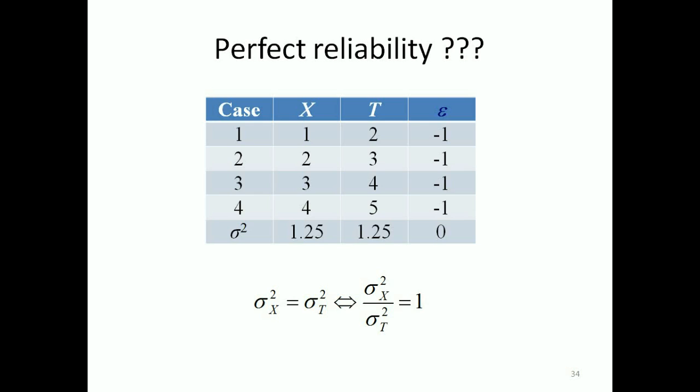Or here. Here we have true scores of 2, 3, 4 and 5 with the same variance and we have measurements 1, 2, 3 and 4 with the same variance. So we have once again the quotient of the two variances gives us 1. But in this case we have a systematic underestimation of the true score.